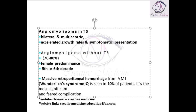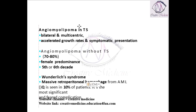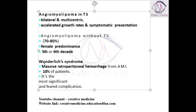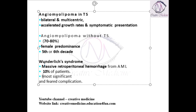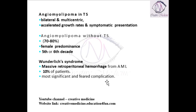There is one more presentation called Wunderlich syndrome. In Wunderlich syndrome, certain patients with angiomyolipoma develop massive retroperitoneal hemorrhage. This is seen in only 10 percent of patients and is one of the most significant and most feared complications of angiomyolipoma.